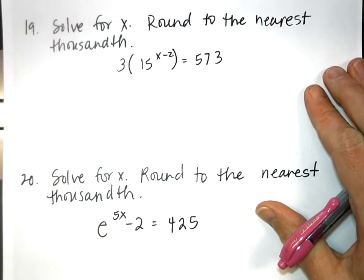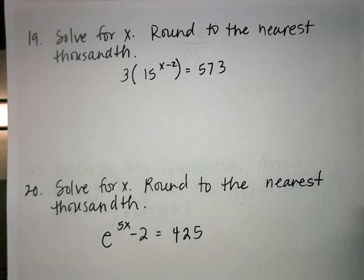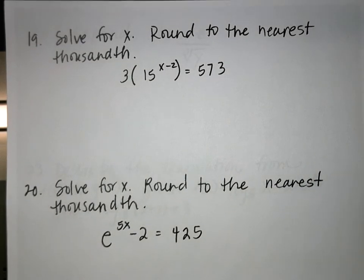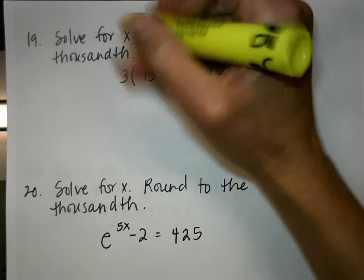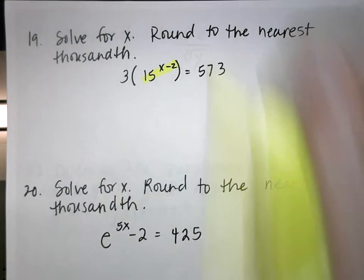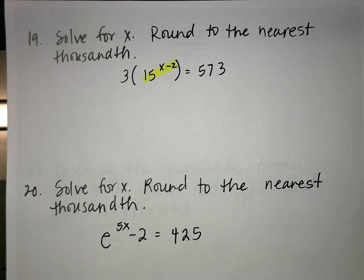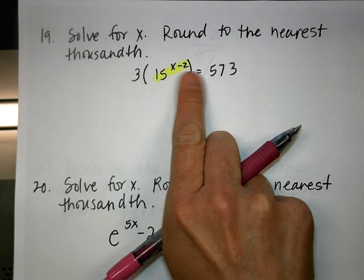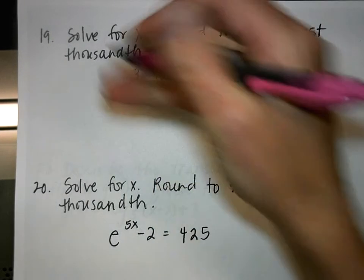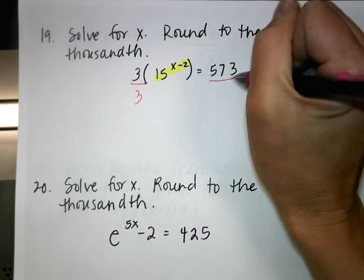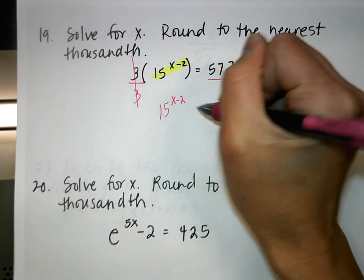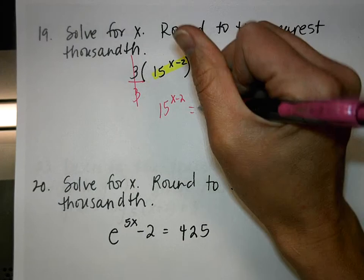Number 19: Solve for x and round to the nearest thousandth. X is in the exponent with 15, so first remove the 3 by dividing both sides by 3. Now we have 15 to the (x − 2) power equals 573 divided by 3, which is 191.